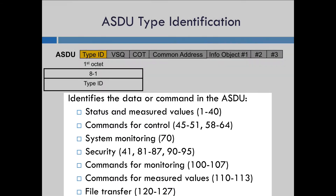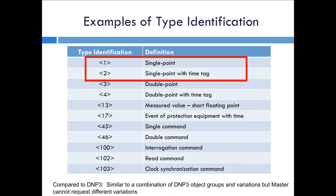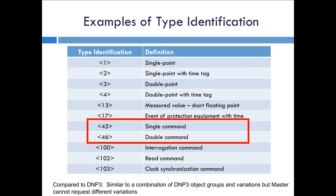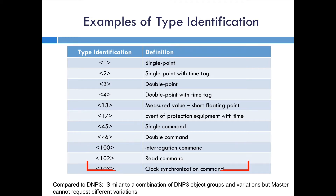Here are just a few examples: single point with or without time, double point with or without time, single point command, double point command, a read command, and clock synchronization. If you compare this to DNP3, it's roughly similar to the different object groups and variations, except it's fixed. With DNP, the master can request a specific object group or data type and a specific variation. With IEC 60870-5, it's fixed — the master cannot request different variations other than to request a specific type identification, and it gets the variation defined with that type.